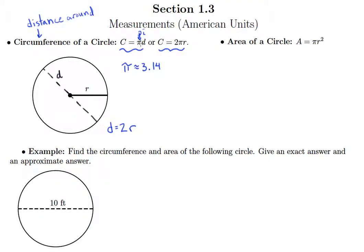So this pi is a constant that will always give us the circumference when we multiply it by the diameter or when we multiply it by two and the radius.